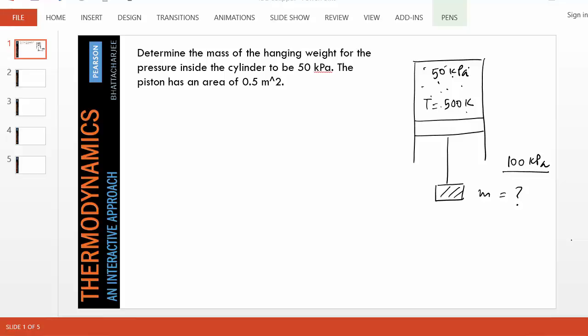In this problem, a mass m is hung from a piston, and there's a gas inside the piston-cylinder device. As you can intuitively understand, the action of this mass will be to reduce the pressure inside. The outside pressure is 100 kPa, and the question is: what should be the mass m so that the inside pressure becomes 50 kPa? The temperature of the gas is also supplied.